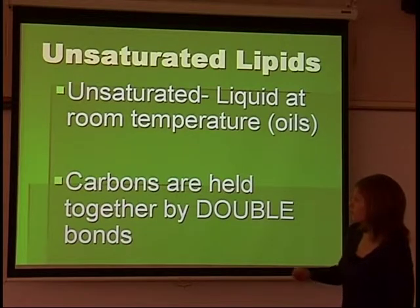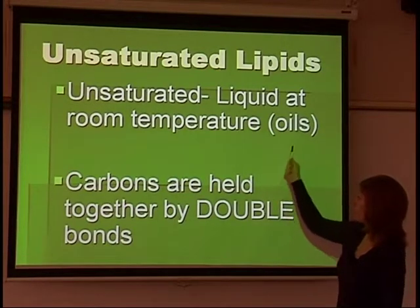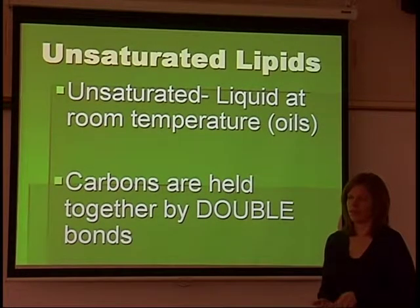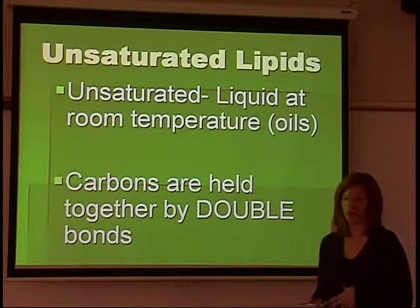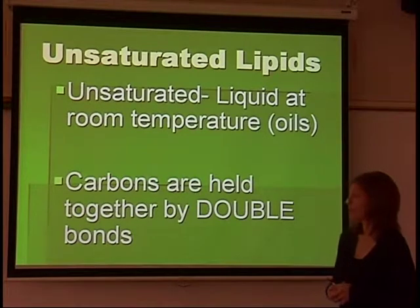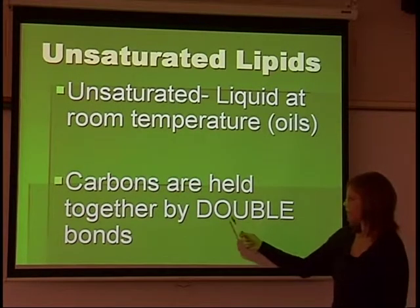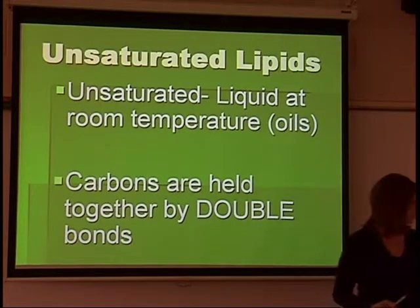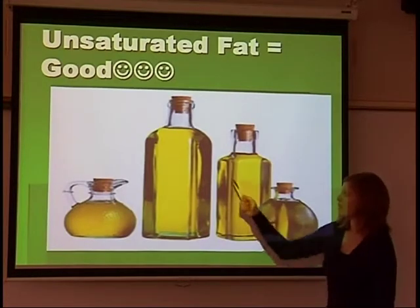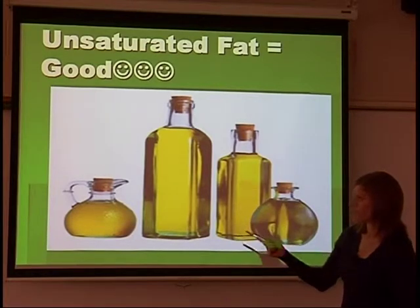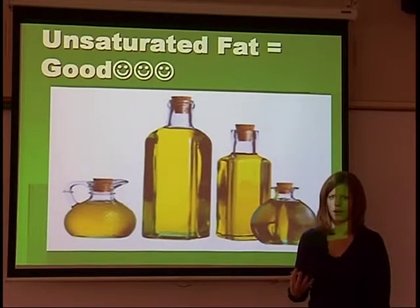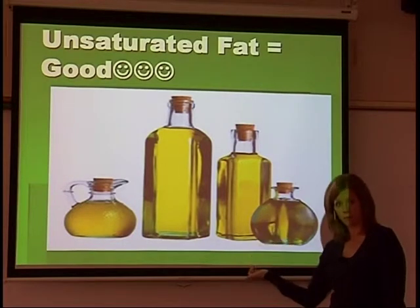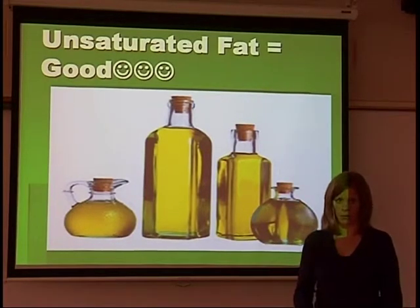Unsaturated fats tend to be liquid at room temperature — oils. Most oils come from plants, like sesame oil, olive oil, or corn oil. The chemistry is a little different in that the carbons are held together by double bonds, not all single bonds. These tend to be better for you — more heart healthy — and they're not going to cause as many problems with clogging arteries, because they come from plants as opposed to saturated fats, which come from animals.